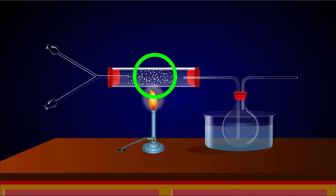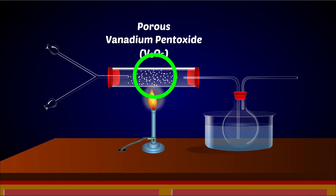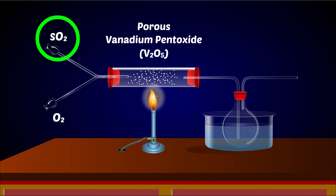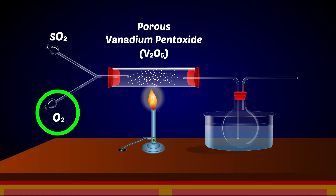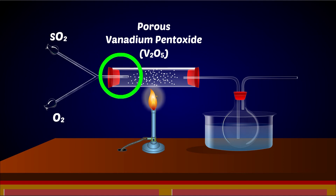The most widely used catalyst for sulphur trioxide production is porous vanadium pentoxide, i.e., V₂O₅. The presence of moisture deactivates the catalyst, so only dry and pure sulphur dioxide and oxygen gases are used over the catalyst.